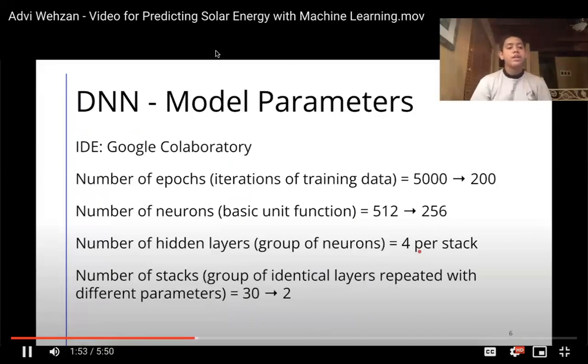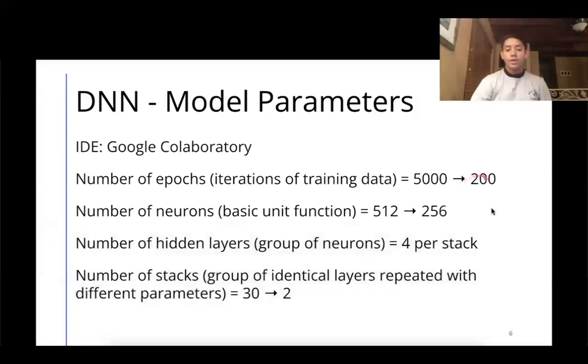When it comes to our model parameters, the IDE we ended up using was Google Colab. The number of epochs - iterations of training our data - we initially started with 5,000, but decided 200 would be fine. The number of neurons in the activation function was initially set to 512, and we brought it down to 256.